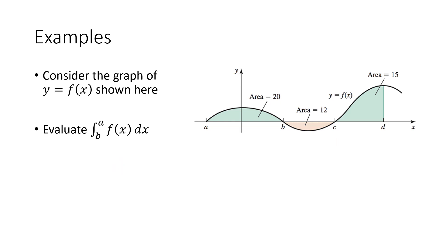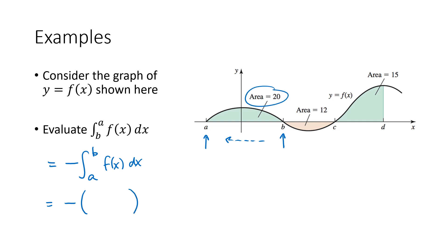For the integral from b to a, we're starting at b and going backwards to a. Whenever we have a backwards integral, we fix it by reversing the bounds and putting in a minus sign. The area from a to b is positive, giving 20, but the minus sign we introduced gives us negative 20.